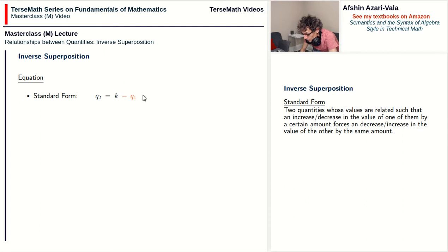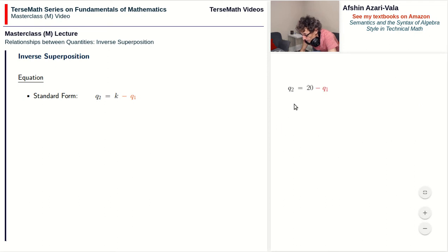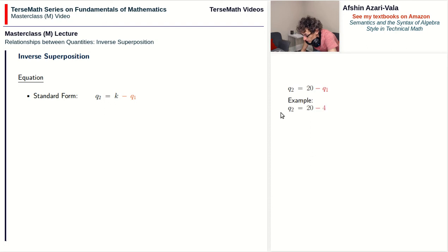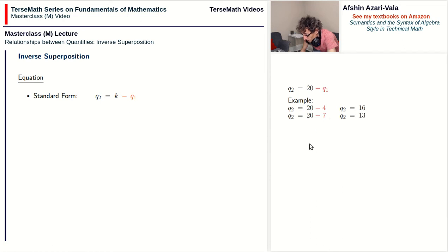To see how an equation like this captures a relationship like this, let's look at an example. Let's say k has the value 20 — that value is not going to change. If q1 is 4, then q2 is 16, which is 20 minus 4. Now if we increase q1 by 3, q1 was 4 and now it's 7. But now we are subtracting 3 more, so q2 will go down by 3. q1 goes up by 3, you subtract 3 more, q2 goes down by 3. This is how equations like this capture the meaning of inverse superposition problems.